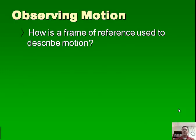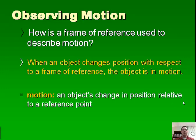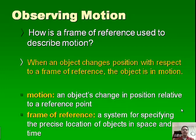So to start looking at the first question: When an object changes position with respect to a frame of reference, the object is in motion. Motion is defined as an object's change in position relative to a reference point. And we define frame of reference as a system for specifying the precise location of an object in space and time.